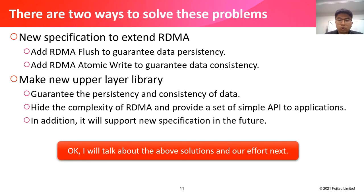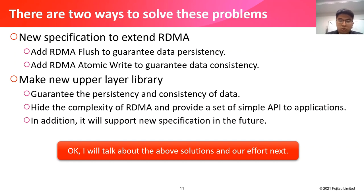There are two ways to solve these problems. The first way is to introduce a new specification to extend RDMA — it adds RDMA flush to guarantee data persistency and RDMA atomic write to guarantee data consistency. The second way is to make a new upper-layer library that not only guarantees persistency and consistency of data, but also hides the complexity of RDMA and provides a set of simple APIs to applications. In addition, it will support the new specification in the future.